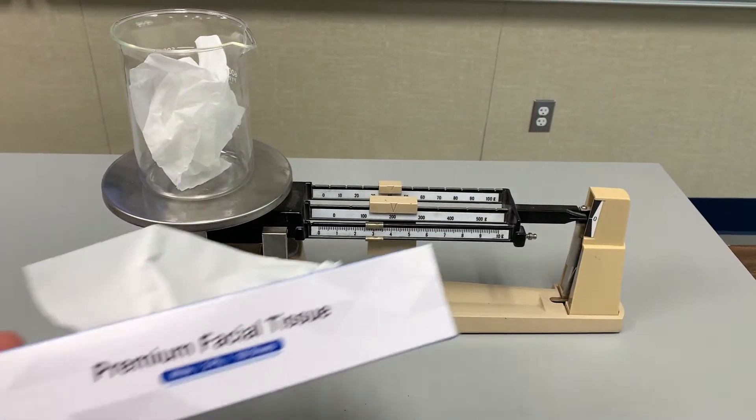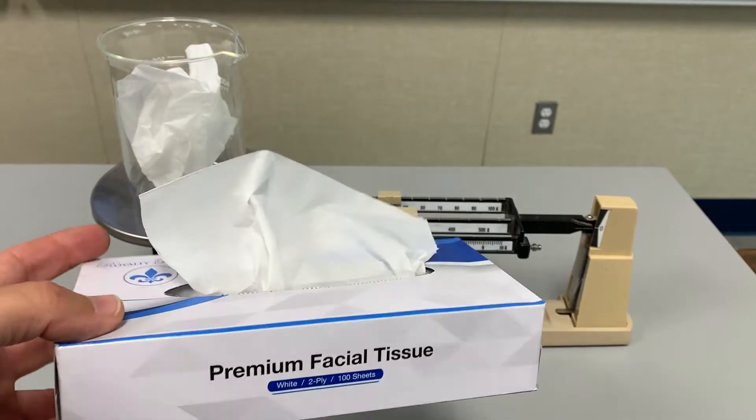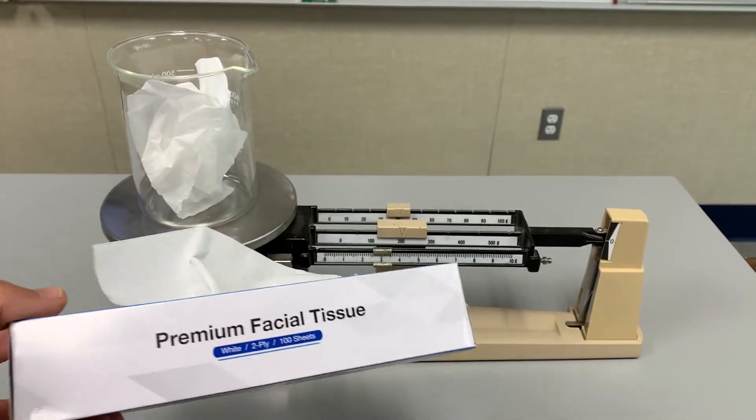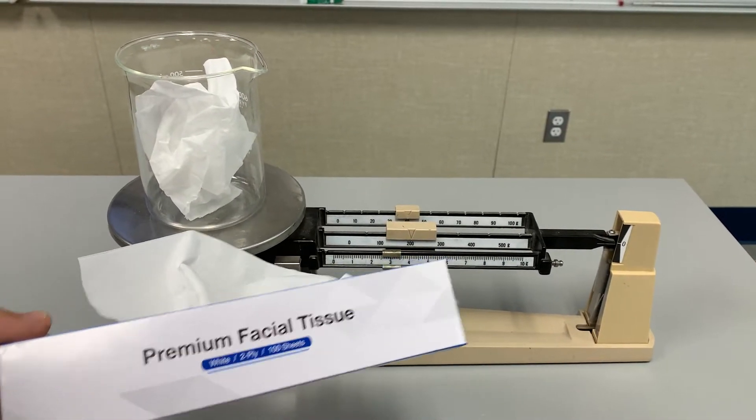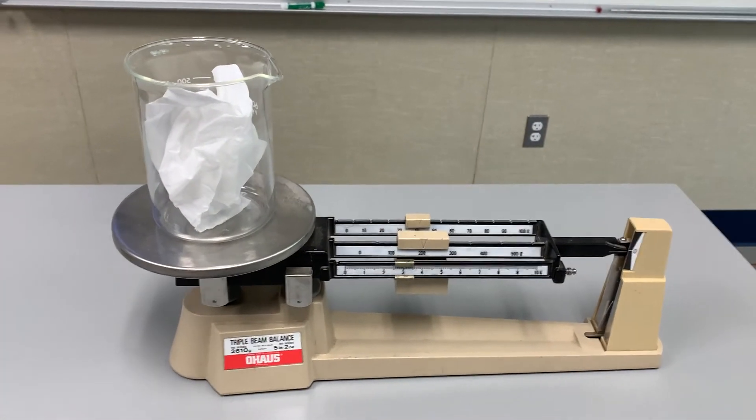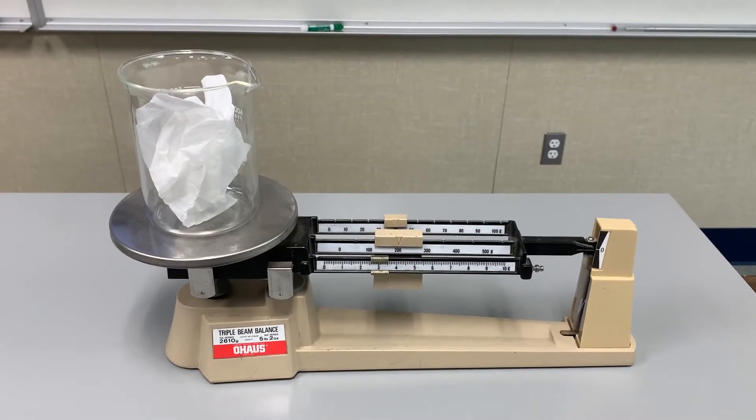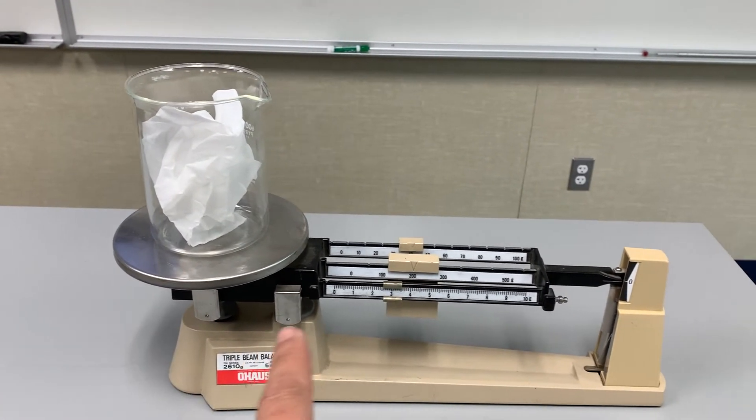To do this experiment, I've got a piece of facial tissue which is made of wood, essentially. Technically it's called cellulose in the scientific world. I'm going to burn this inside this beaker on this triple beam balance.